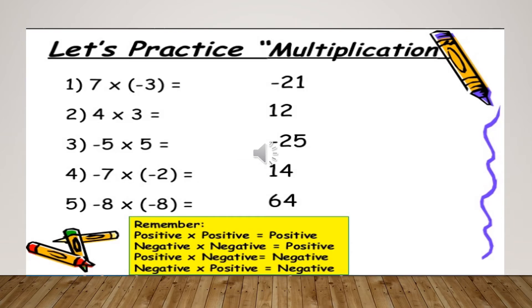Now let's have some practice. 7 multiplied by minus 3 will be minus 21. Here you can see that one number was positive and another number was negative — negative and positive, your product will be negative. 4 multiplied by 3 equals 12; both numbers are positive, so the answer is positive 12. Minus 5 multiplied by 5 means positive and negative, so the answer is negative — that is minus 25.